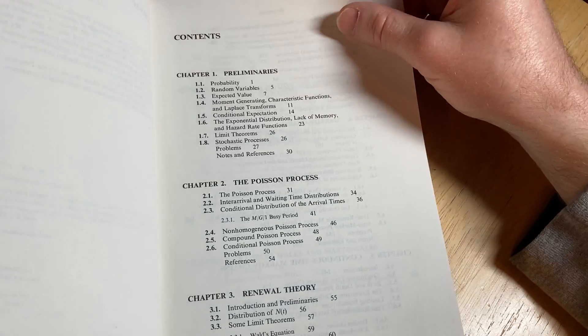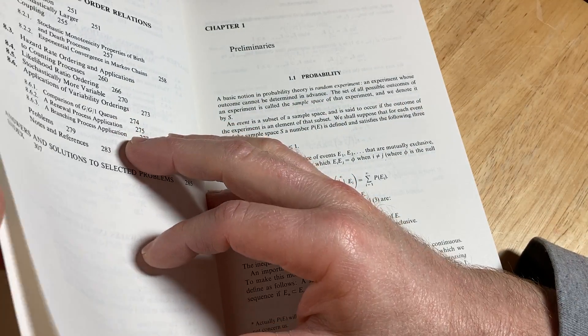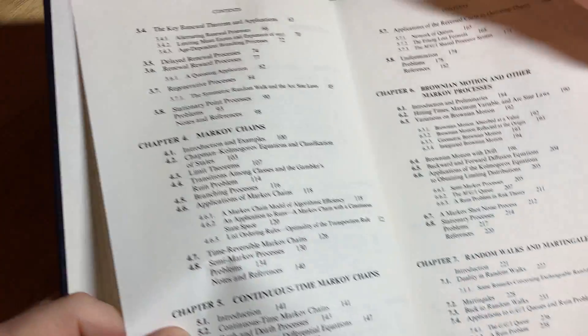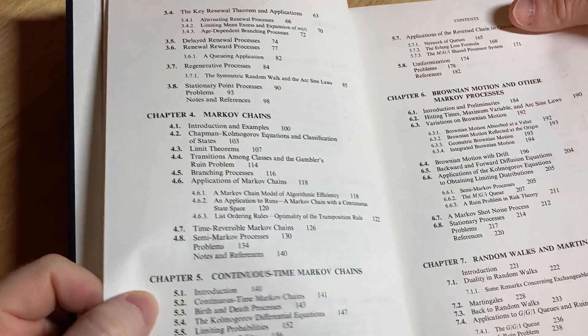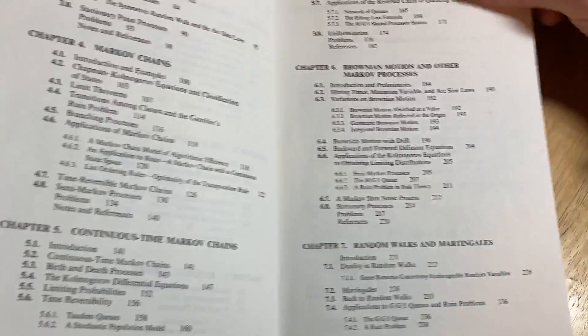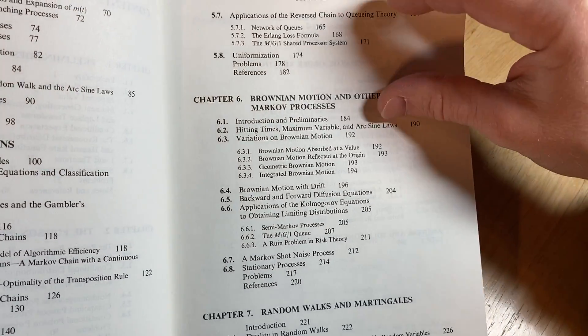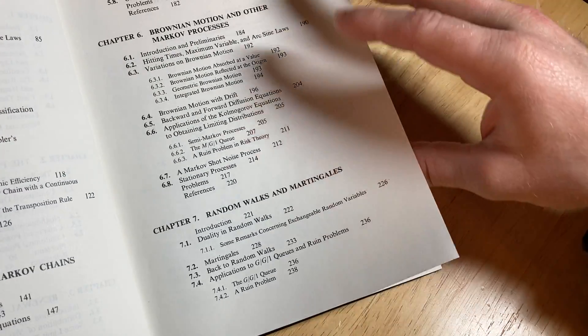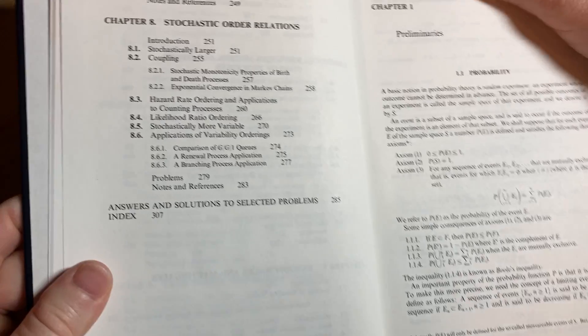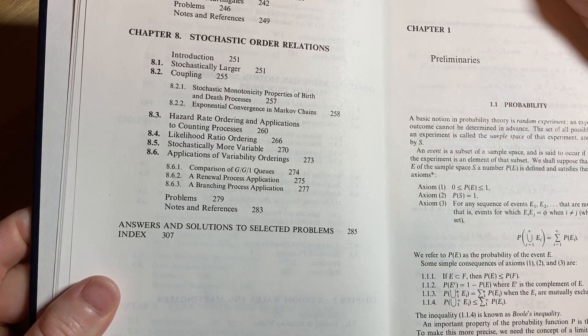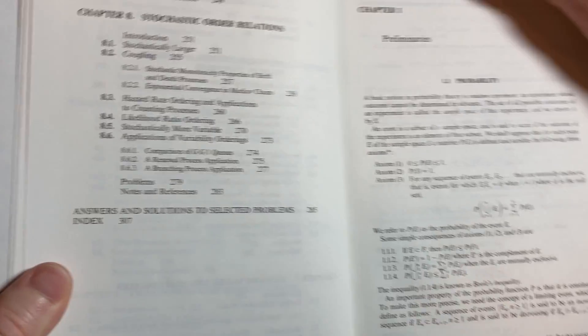Poisson process. And there are some answers in the back of the book. Markov chains, continuous time Markov chains, Brownian motion and other Markov processes, random walks and martingales. Now, I remember we didn't cover, definitely didn't cover the whole book.